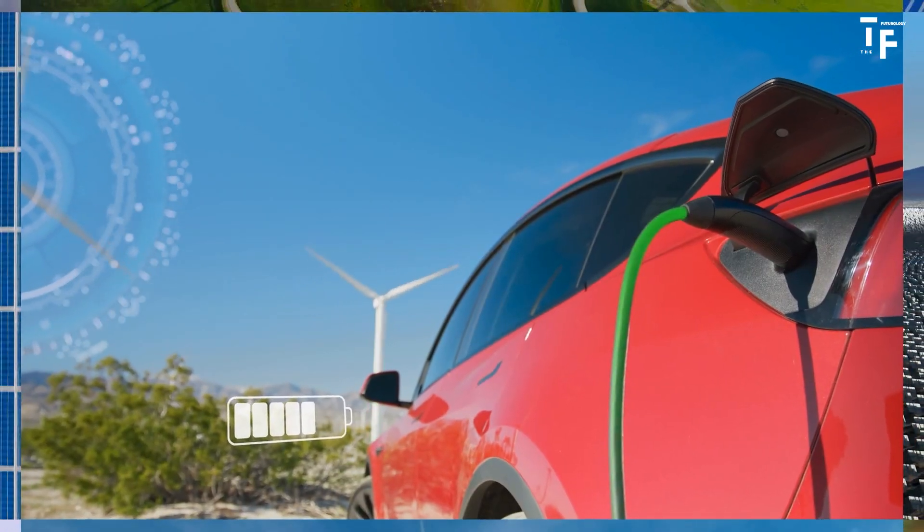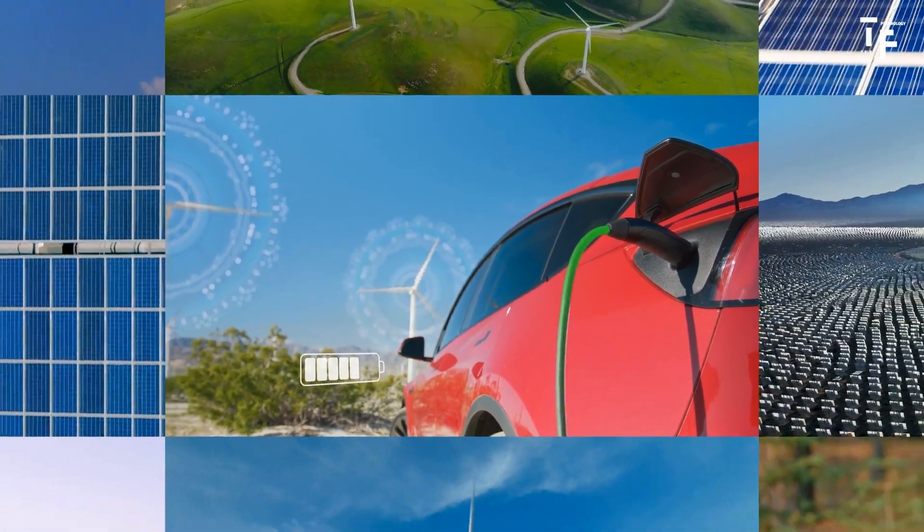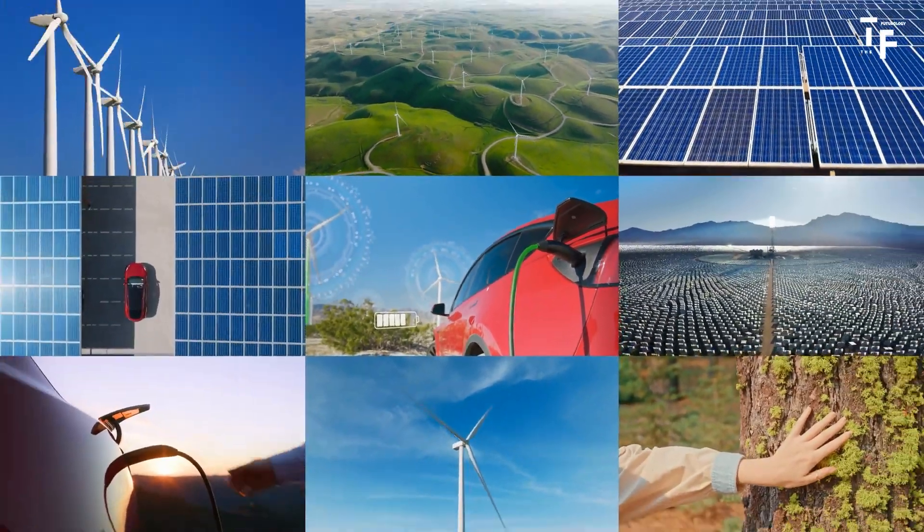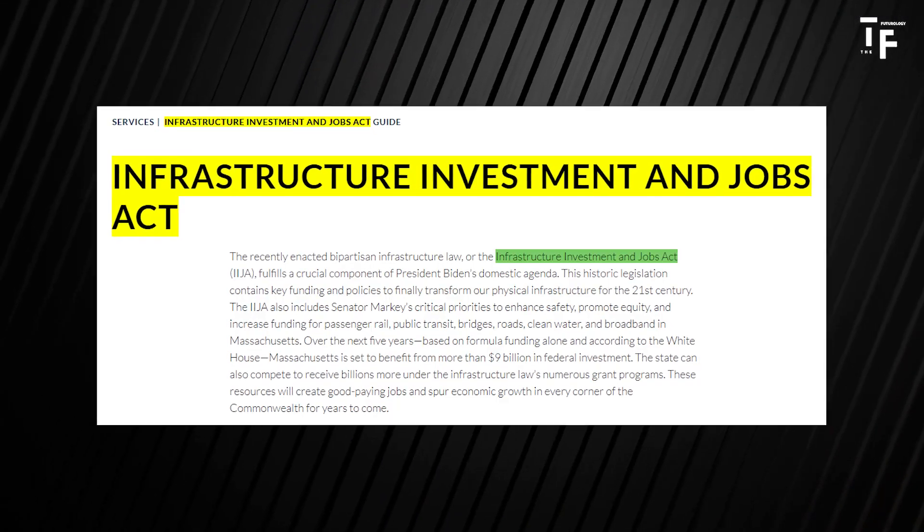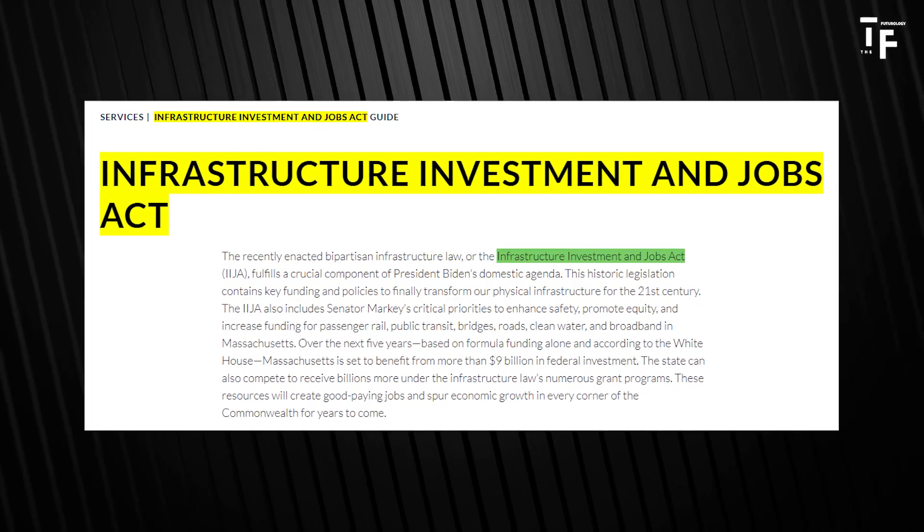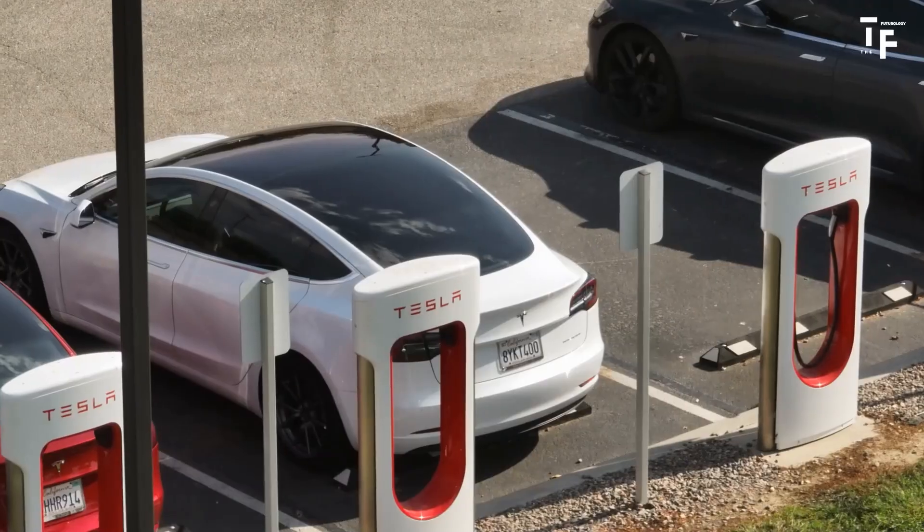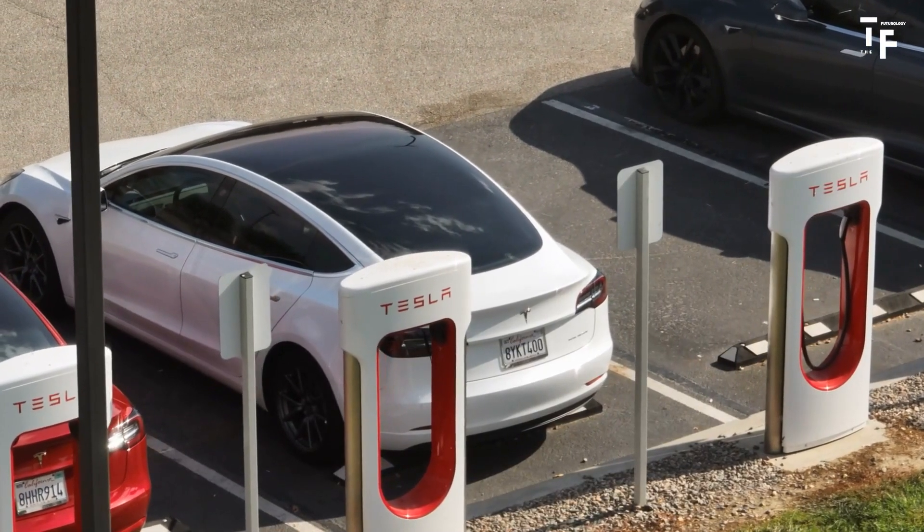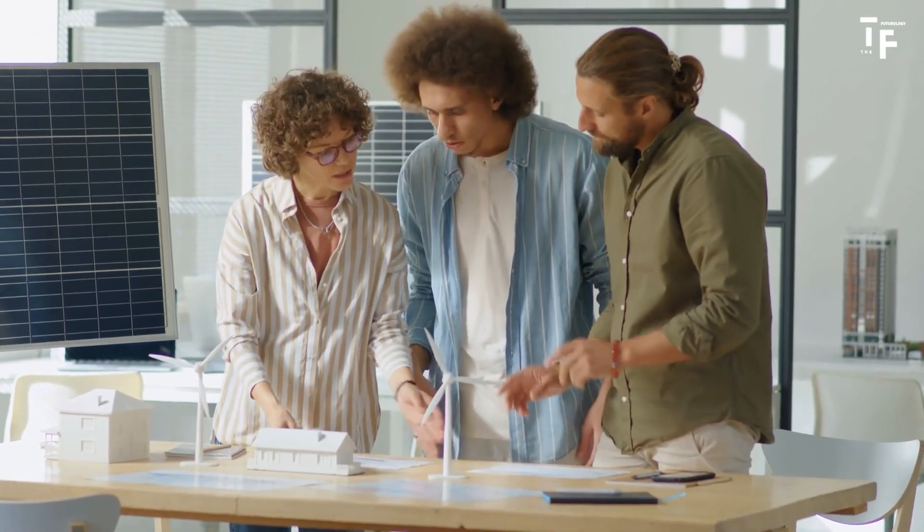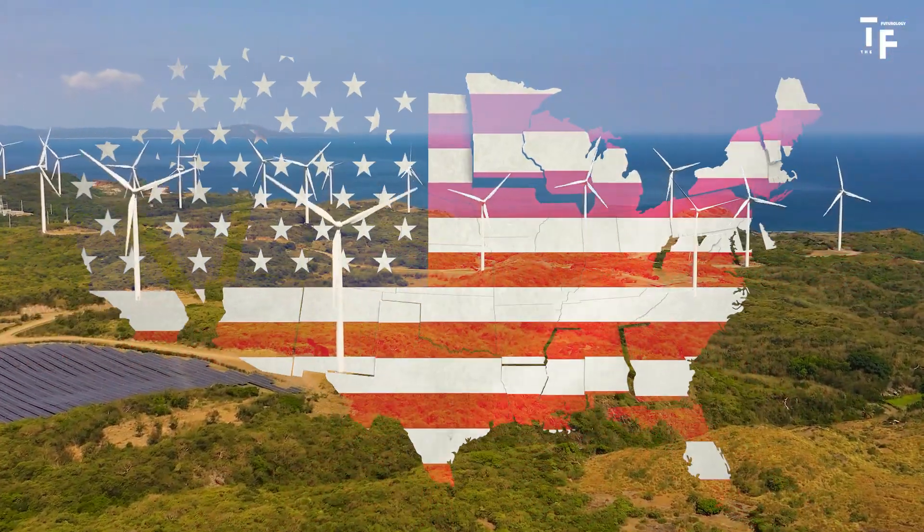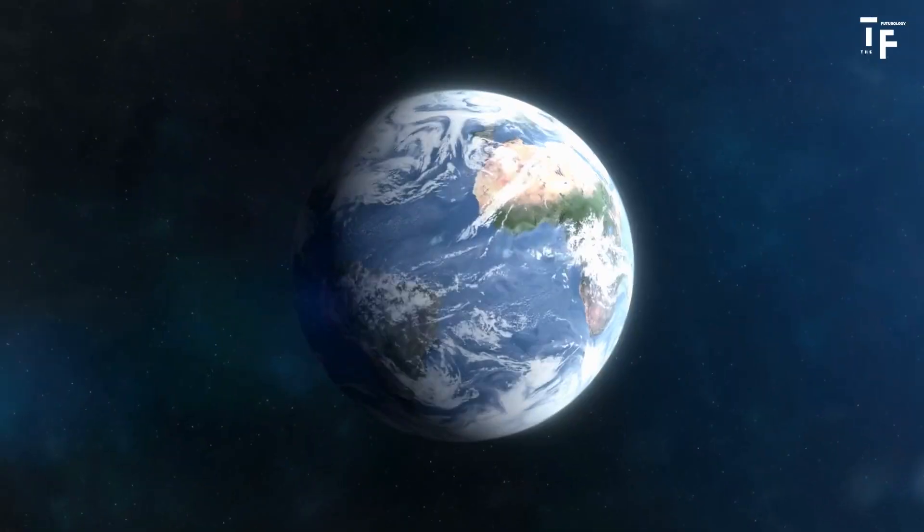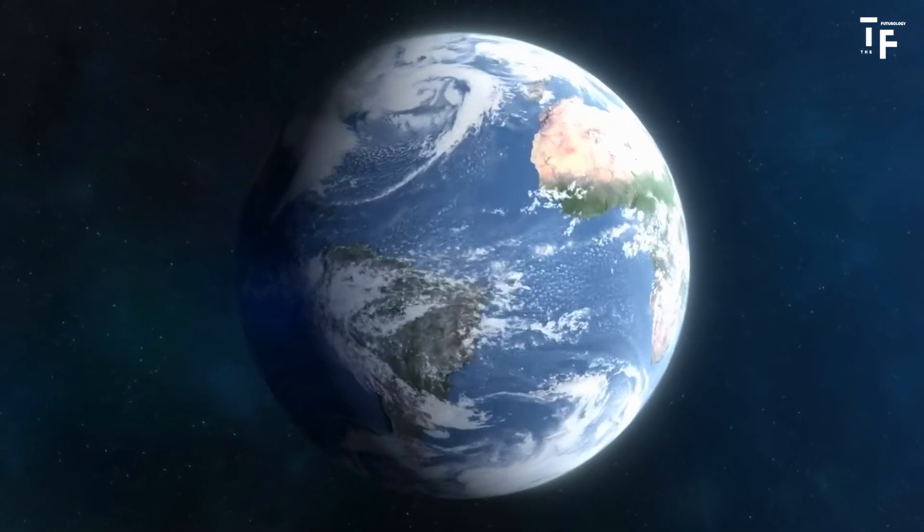This influx of capital is accelerating the deployment of clean energy technologies. It is expected to be critical in reshoring clean energy manufacturing, strengthening supply chains and modernizing the electric grid. The IIJA complements these efforts by allocating substantial funds to improve grid resilience, electrify transportation and enhance the infrastructure necessary for renewable energy expansion. Together, these acts are transforming the US energy landscape, making it more sustainable and resilient in the face of climate challenges.